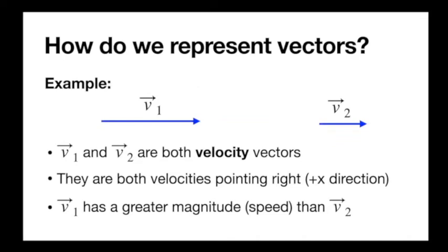Here are two more vectors, velocities. These arrows tell us that both v1 and v2 are velocities to the right. We can also see that v1 is longer than v2, which tells us that its magnitude is greater — v1 is faster, represents a greater speed — but they are in the same direction. That's about all we need to know about graphically representing vectors.